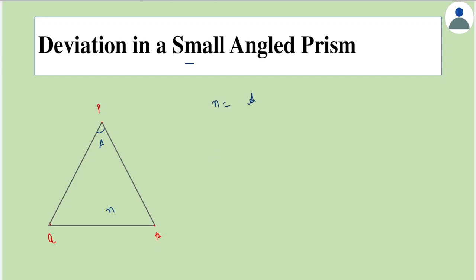...sine of (A plus D) by 2, divided by sine of A by 2, where this D is called the angle of minimum deviation. So if A is small for a small angled prism, that would mean that even D also is small.